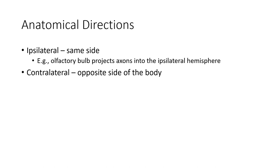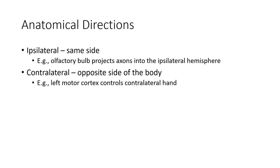For example, your olfactory bulb — the area for the sense of smell — projects its axons into the ipsilateral hemisphere, or the same side hemisphere. Conversely, the motor cortex controls the contralateral side. If your left motor cortex is active, it controls your right side. If the area of the motor cortex that controls your hand is activated on the left, it activates the opposite — your right hand. We say this is contralateral, or the opposite side of the body.